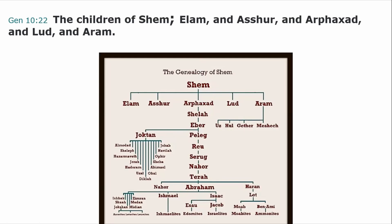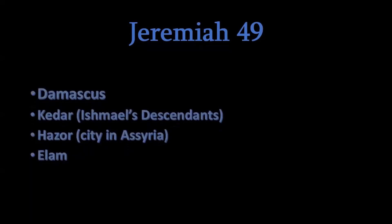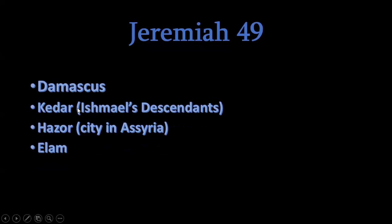Jeremiah 49 talks about Damascus — y'all know that's in the area of Syria. And then it talks about Kedar, which was one of Ishmael's descendants. And Hazor is a city that was in Assyria. Hazor was the place that the Israelites, when they went into captivity, were brought to — a place called Gogaz. So that area in Assyria is talked about in the Bible.